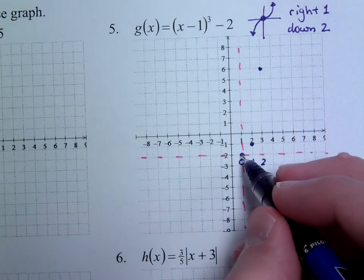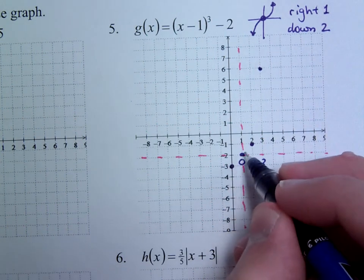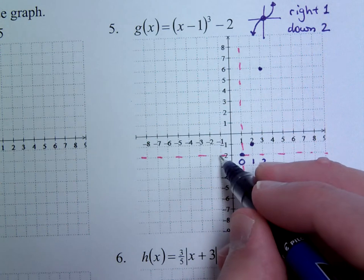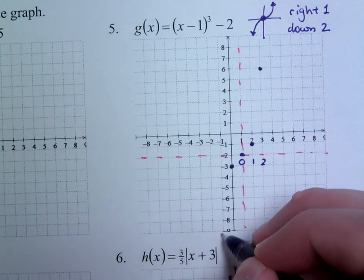On the other side, negative 1 cubed is negative 1, negative 2 cubed is negative 8, so it's going to be down 7, 8, somewhere right about here.